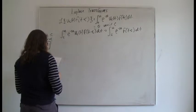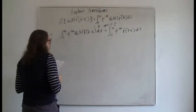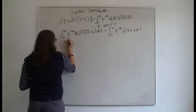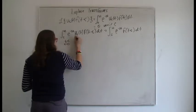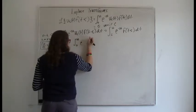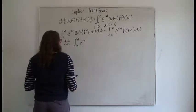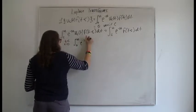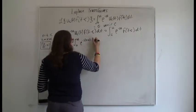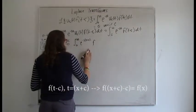This is still the integral in terms of t. Now let's convert to x. When t equals c, x equals zero. So we now have the integral from zero to infinity of e to the minus s times (x plus c) of f of — well, x plus c minus c is just x — so we're left with f(x) dx.